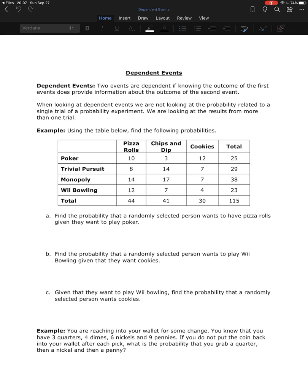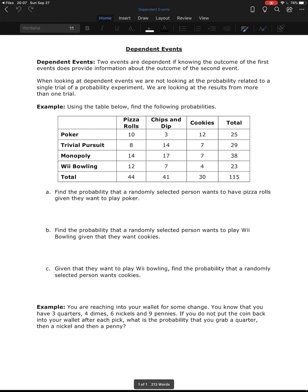So we talked a little bit about independent events, now let's look at the other side of that. Let's look at dependent events. Two events are dependent if knowing the outcome of the first event does provide information for the second event. When we're looking at dependent events, we're not looking at the results from a single trial of an experiment. We're looking at the results from more than one trial.